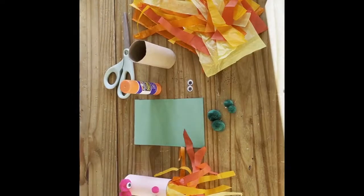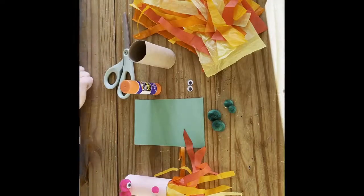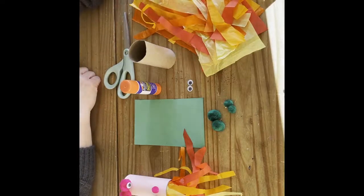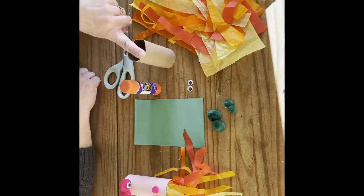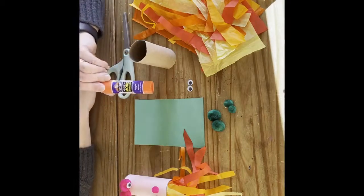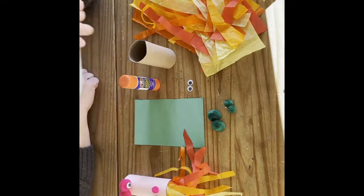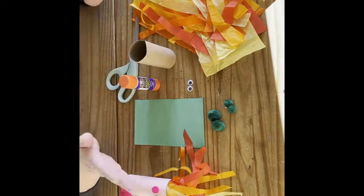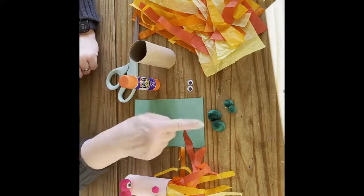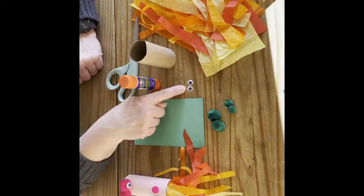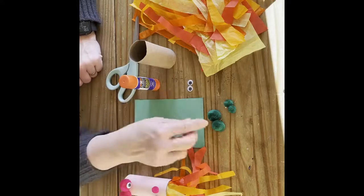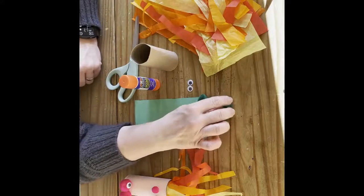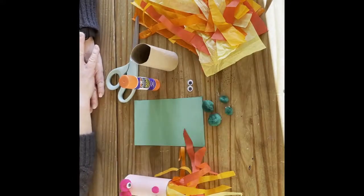For our fire-breathing dragon craft, we will need the following items. We're going to need tissue paper in red, orange, and yellow colors. We'll need a toilet paper roll, a glue stick, and scissors to cut our tissue paper and construction paper. We can use construction paper in whatever color you want. As you see, I made a pink one. Then we'll need googly eyes, about a half inch size, and some pom-poms - about one inch and some three-eighths inch pom-poms. All right, let's get started.